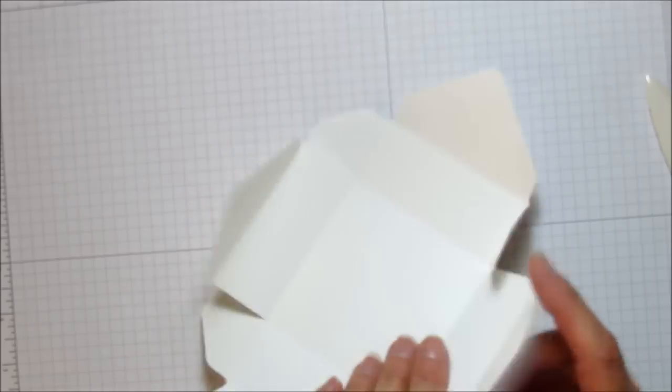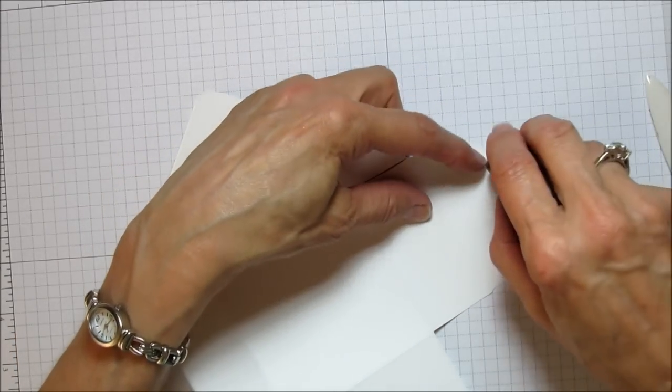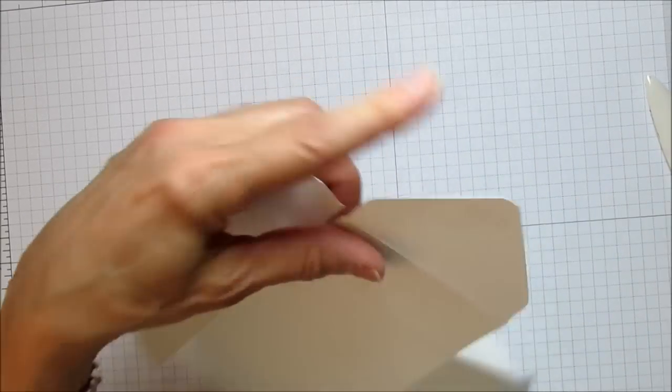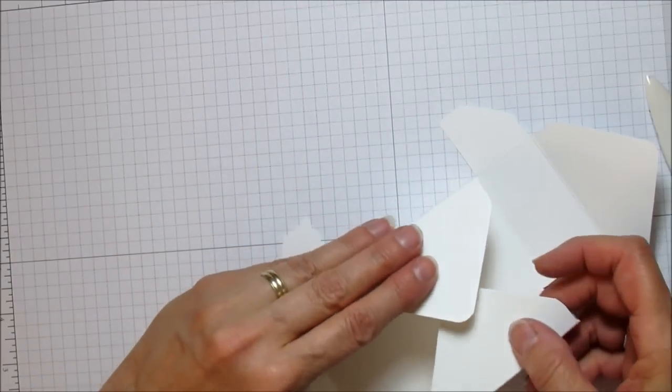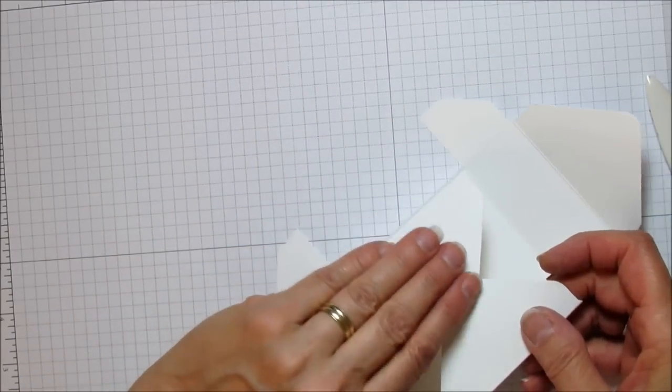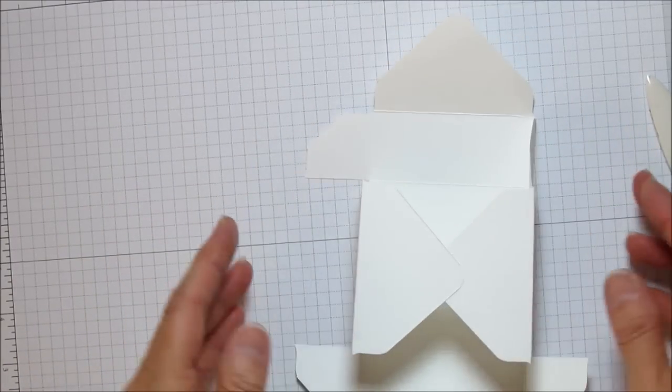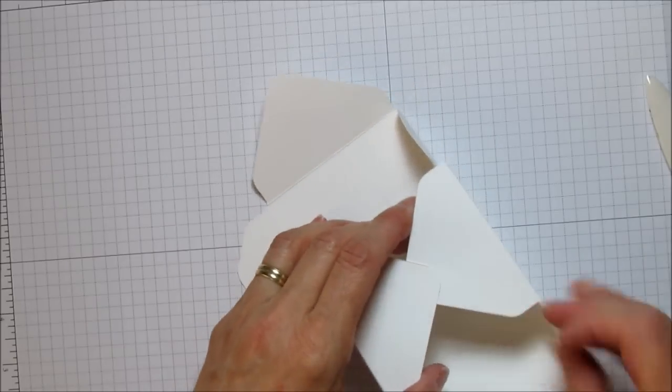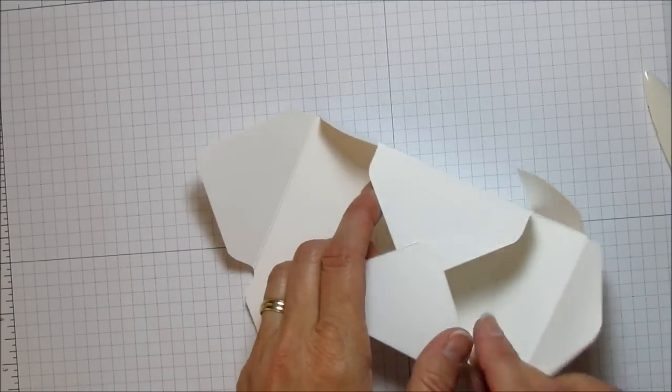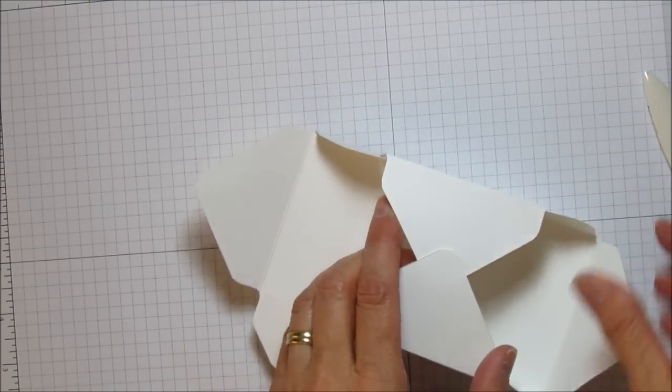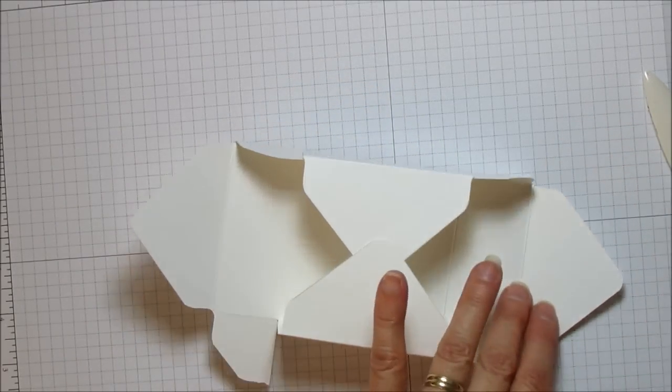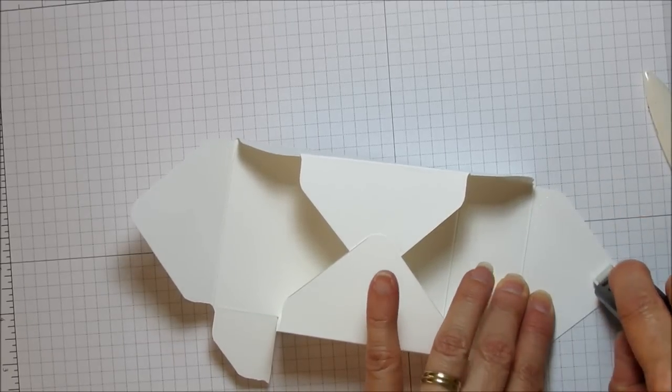What we'll do first is I'm going to put a little bit of fast fuse on this point here and we're going to just join it to this side, so that'll get us started there. Now I'm going to bring these little tabs in and I am going to put fast fuse on here.